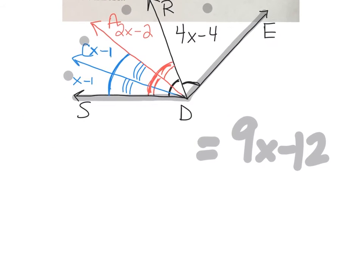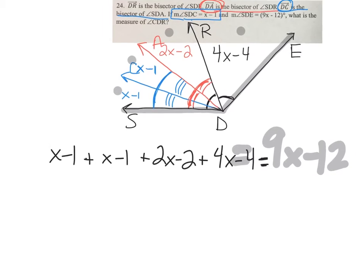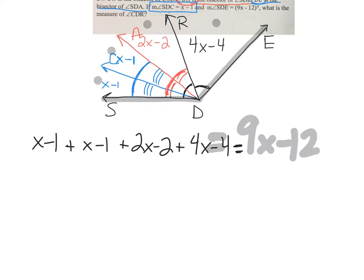Now that I have an algebraic expression for all of my angles, I can make a nice algebraic equation: x minus 1 plus x minus 1 plus 2x minus 2 plus 4x minus 4. Adding all those four angles together should give me the same as 9x minus 12.